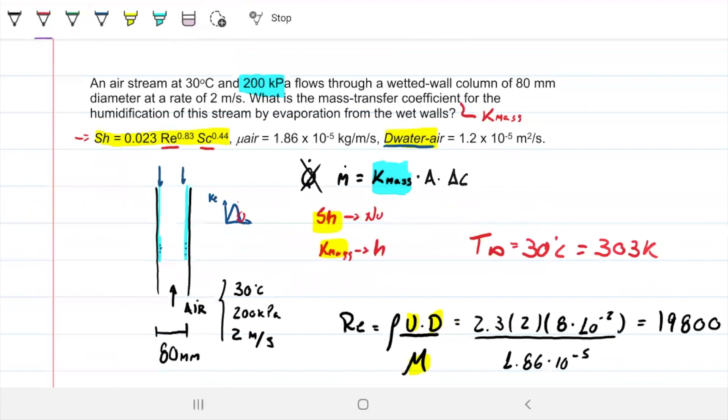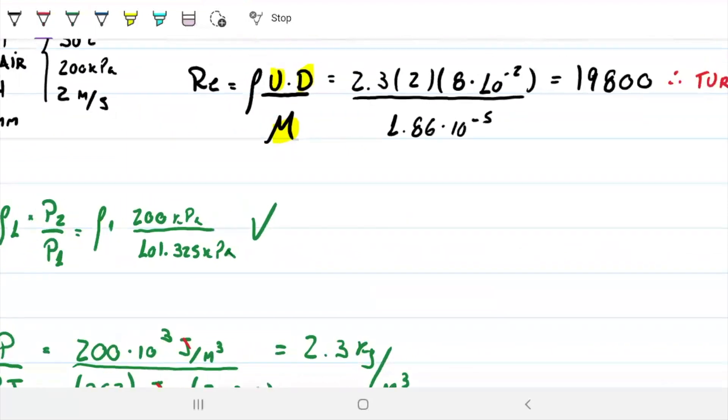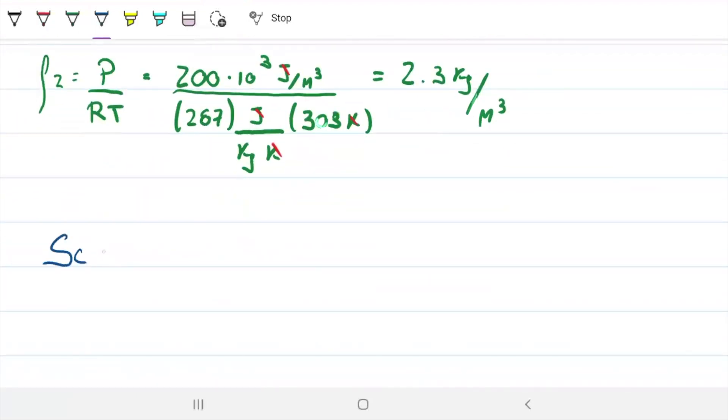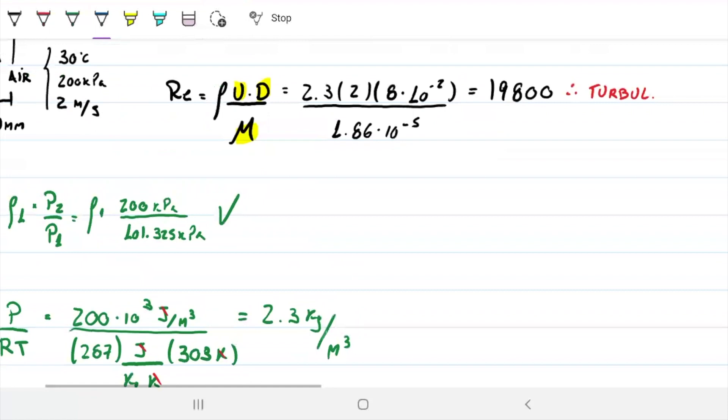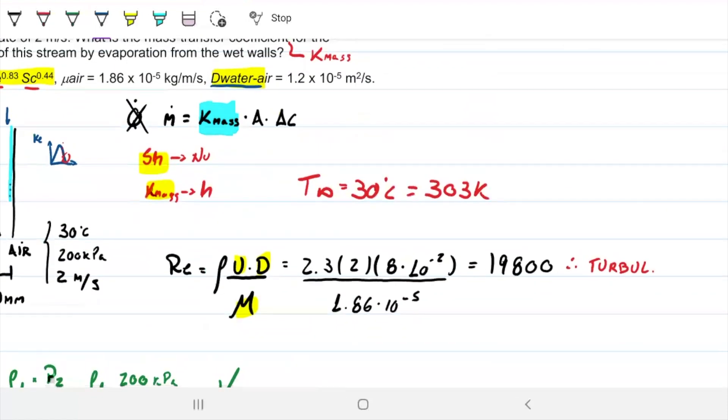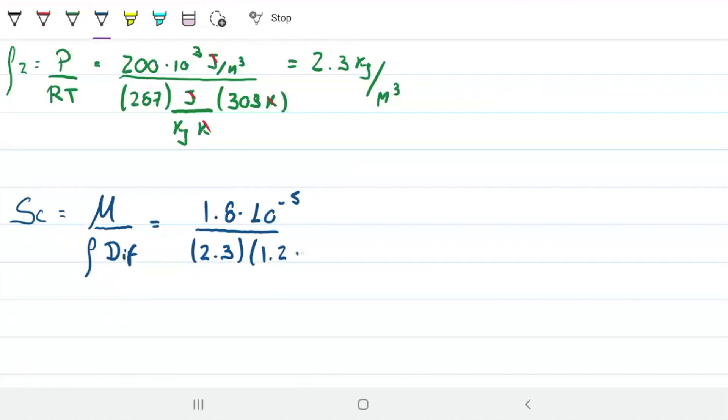What we're interested in is applying this correlation here. The other thing we need for that correlation is Schmidt's number. And Schmidt, as opposed to Prandtl, we don't grab off the table. Schmidt, we calculate. So Schmidt's number. And Schmidt, remember that that's the viscous forces divided by the diffusivity. And thankfully, we have everything, right? The viscous forces in this case were given. The viscosity of this guy was given 1.8 times 10 to the minus 5. The specific mass we just found. And the diffusivity was also given for water here. That's 1.2 times 10 to the minus 5.